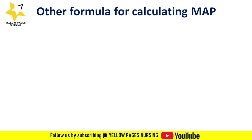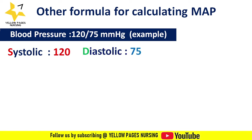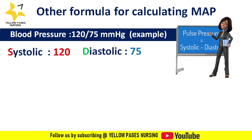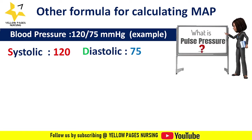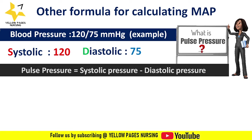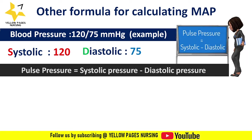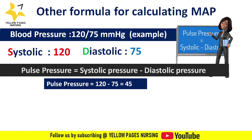Using the same example — systolic blood pressure 120 and diastolic pressure 75 — for this formula we need to know the pulse pressure. Pulse pressure is the difference between systolic and diastolic pressure: SBP − DBP. So here, pulse pressure = 120 − 75 = 45 mmHg.